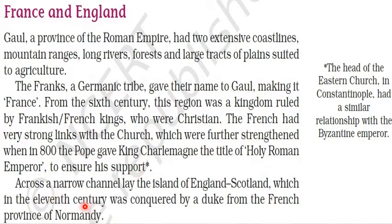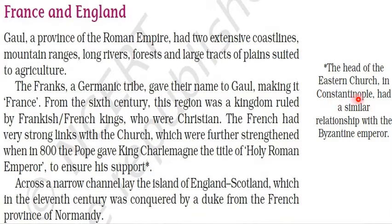Across a narrow channel lay the island of England and Scotland, which in the 11th century was conquered by a Duke from the French province of Normandy. The head of the Eastern Church in Constantinople had a similar relationship with the Byzantine Emperor.